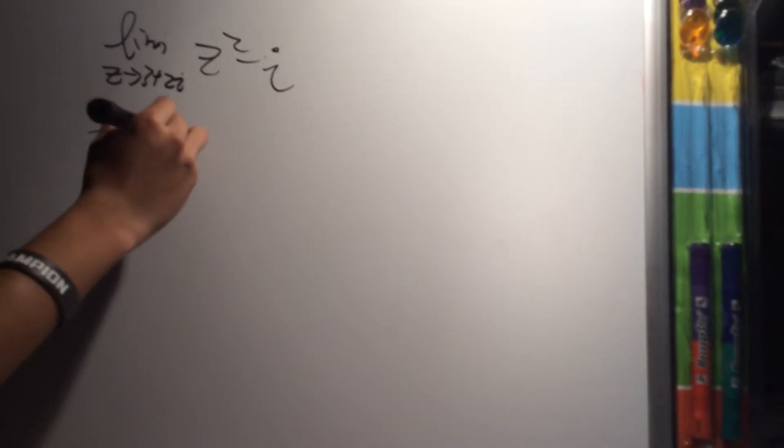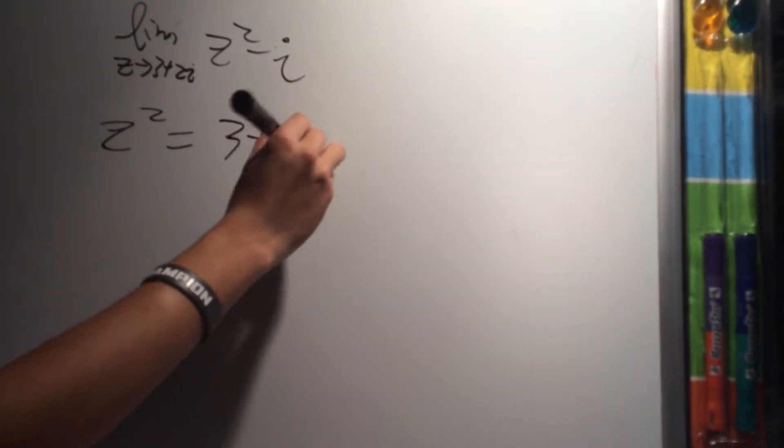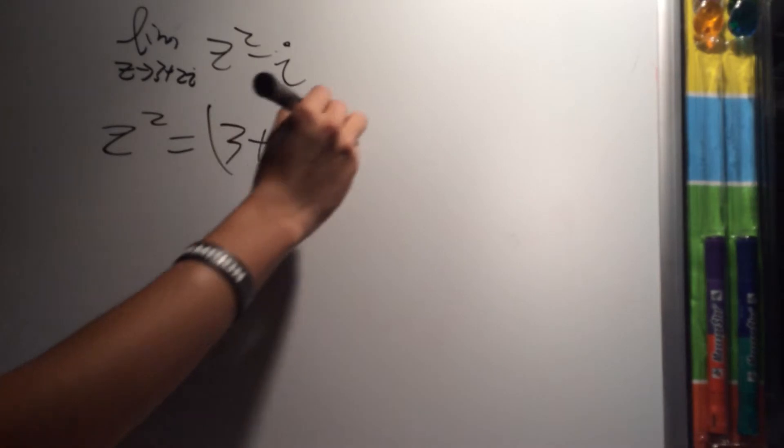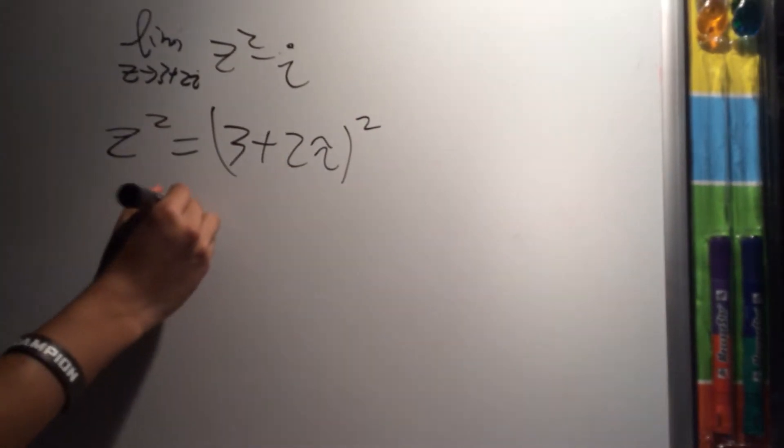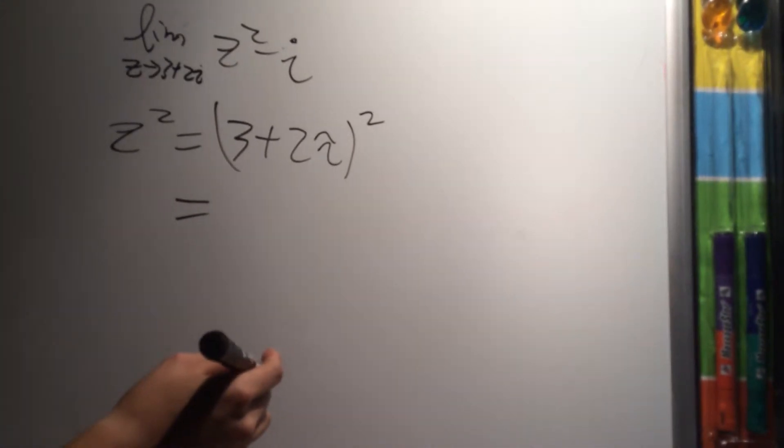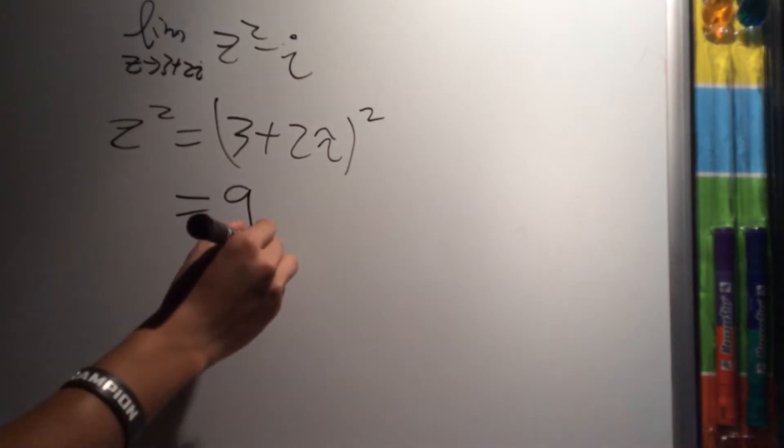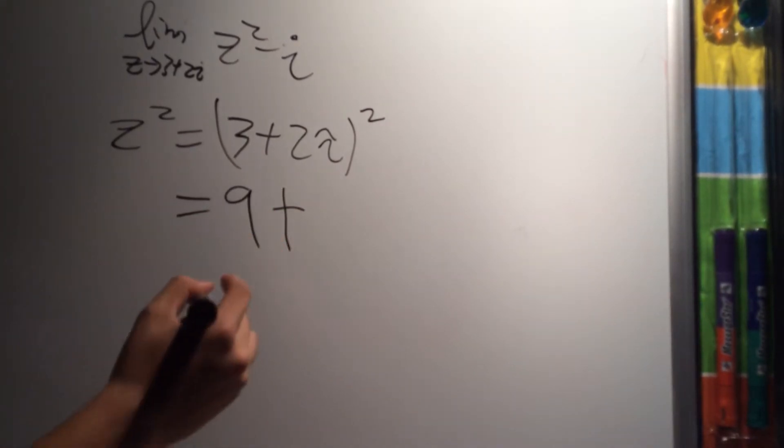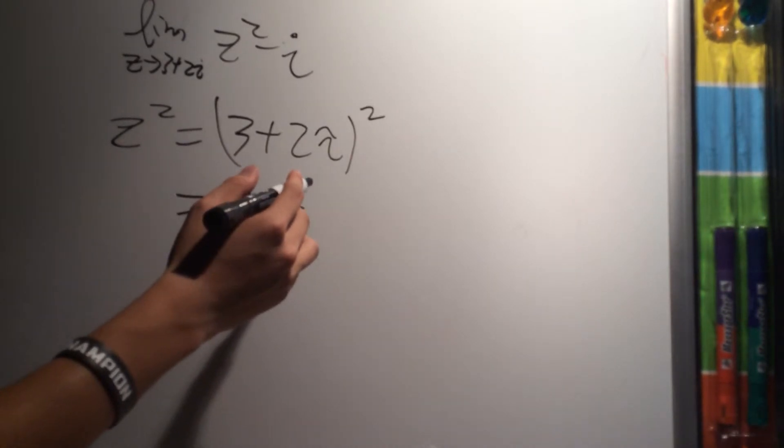Here, the real function is z squared, which is equal to 3 plus 2i squared. We can easily expand it and write it as 3 squared, which is 9, plus 2 times 3 times 2i. That's going to give us 12i.